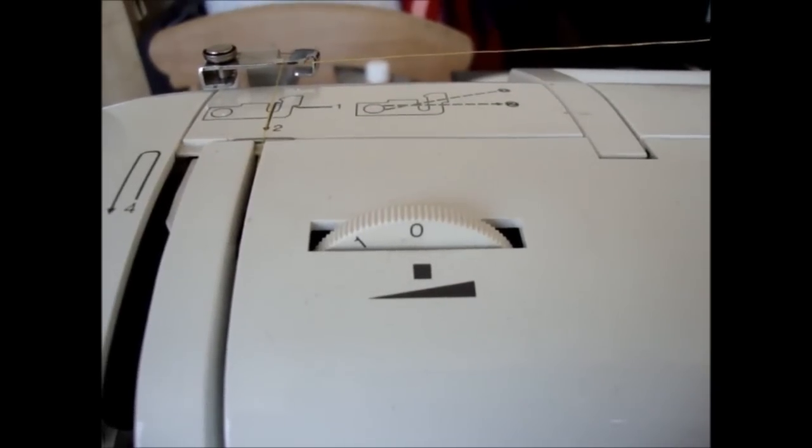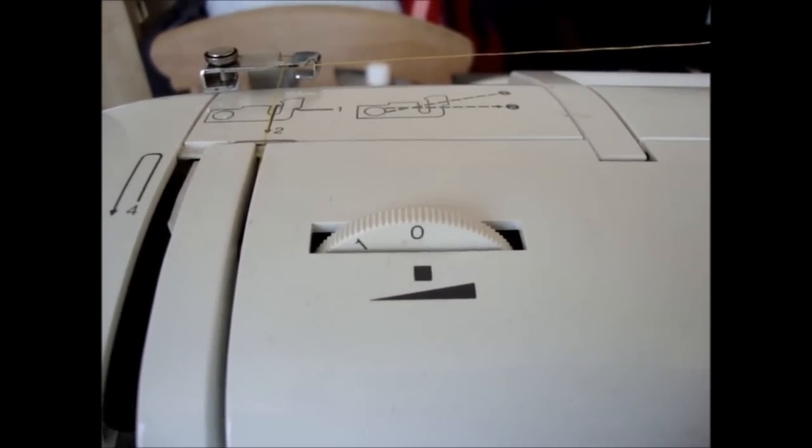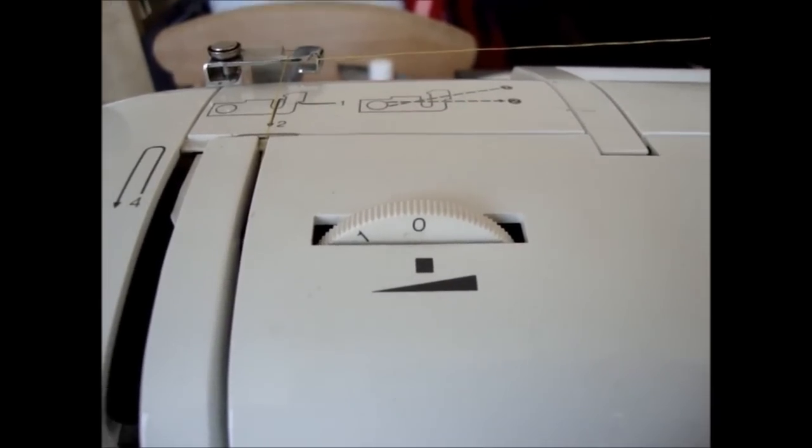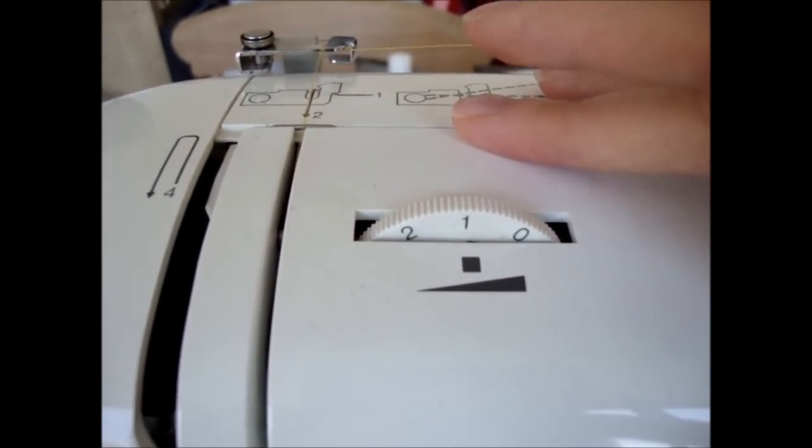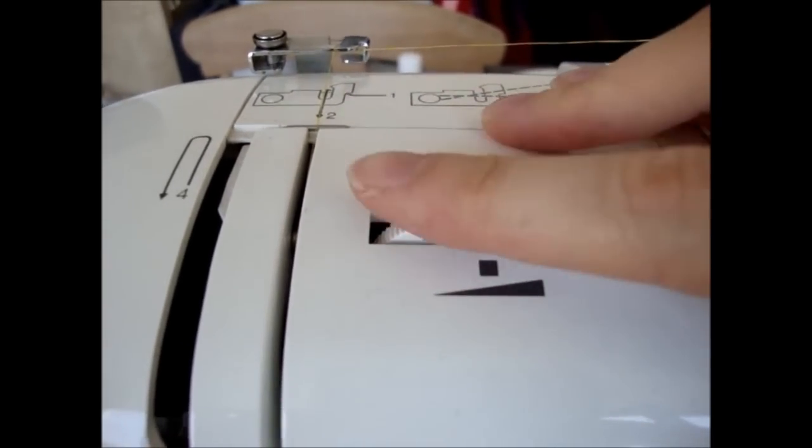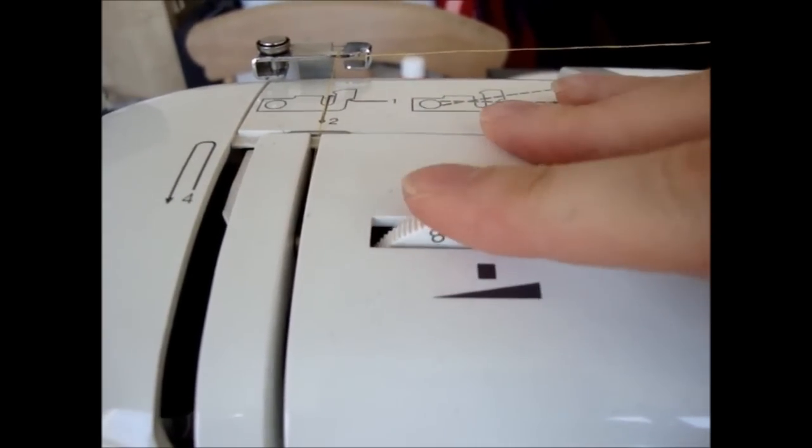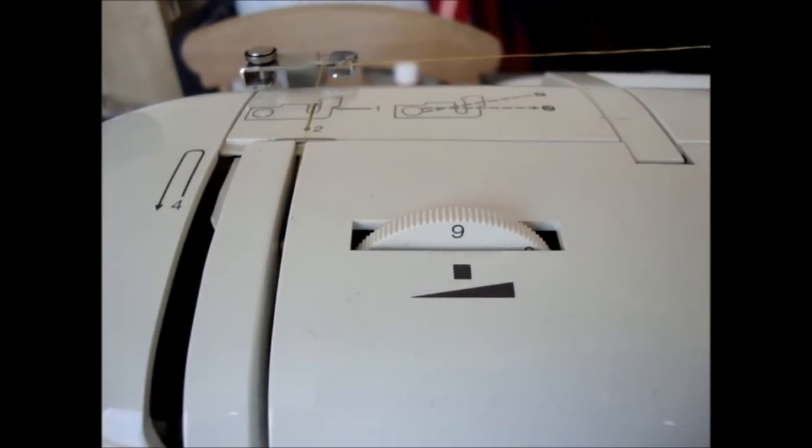The method itself is pretty straightforward. All you're really doing is sewing lines with different tensions assigned to each line. So you would basically put your tension to one and then sew a line on your fabric, and then put your tension up to three, sew a line on your fabric, and five, seven, and then nine. So I'm going to do that just now and we'll see what the results are.